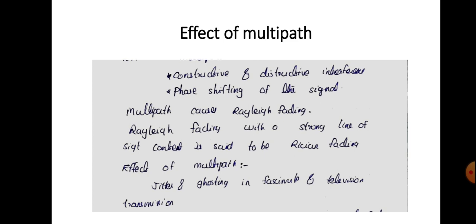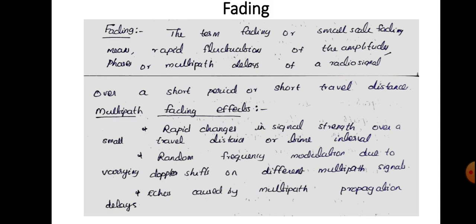These are all effects of multipath transmission. Due to multipath, the strength of the signal may be reduced. In that case we come across the term fading. For representing fading we use Rayleigh fading and Rician fading, which we will see in the next video. Next is fading.